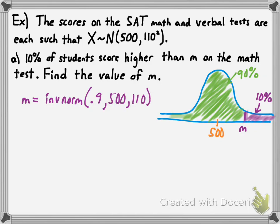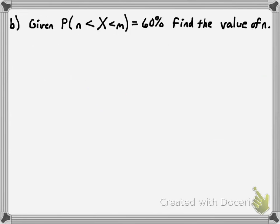To three significant figures, m is about 641. In practice, SAT scores would be rounded to 640, but keeping three significant figures gives us 641 as the value of m.